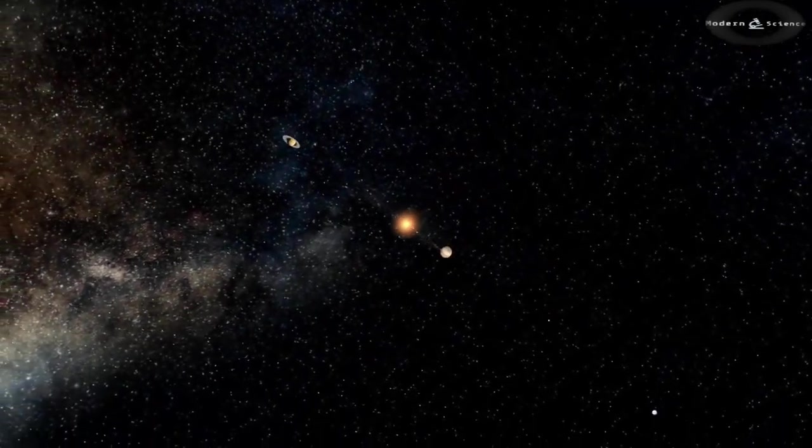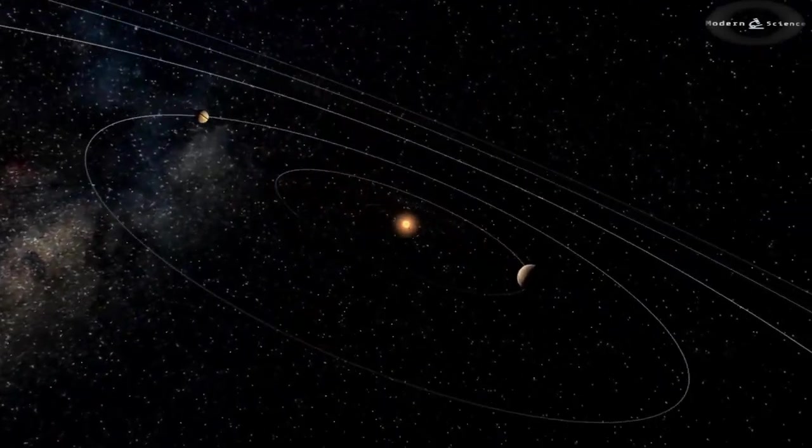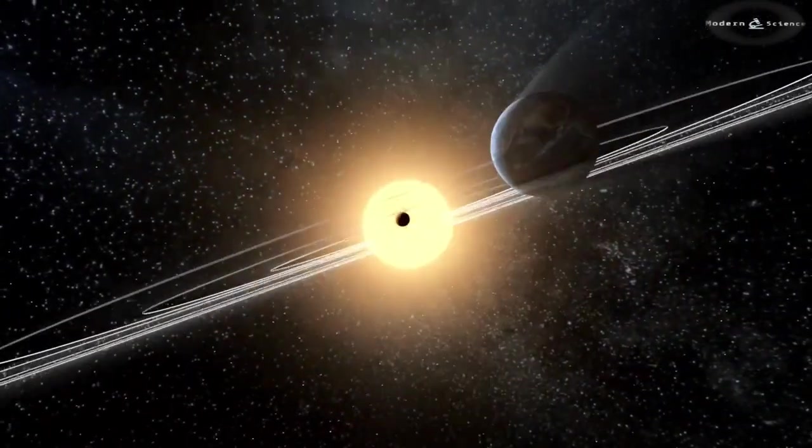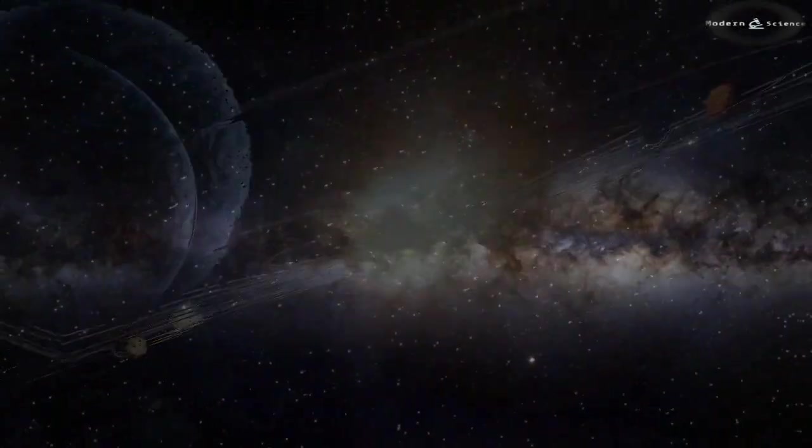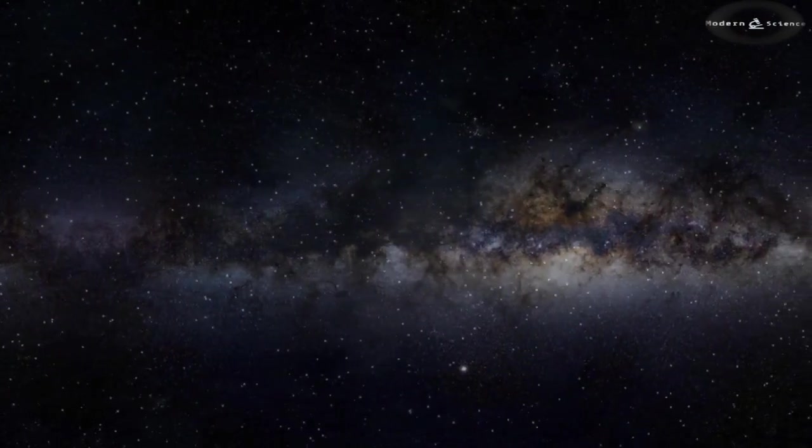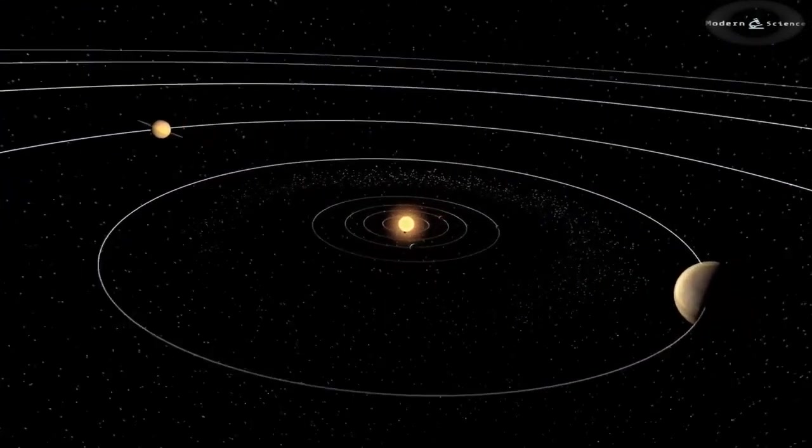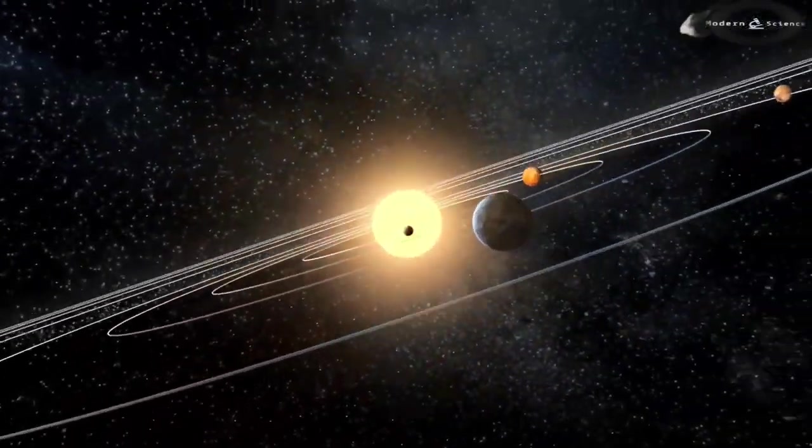Our solar system is one of hundreds of billions of stars in the Milky Way galaxy, which is one of at least two trillion galaxies in our observable universe. We live on one planet in the solar system called Earth.